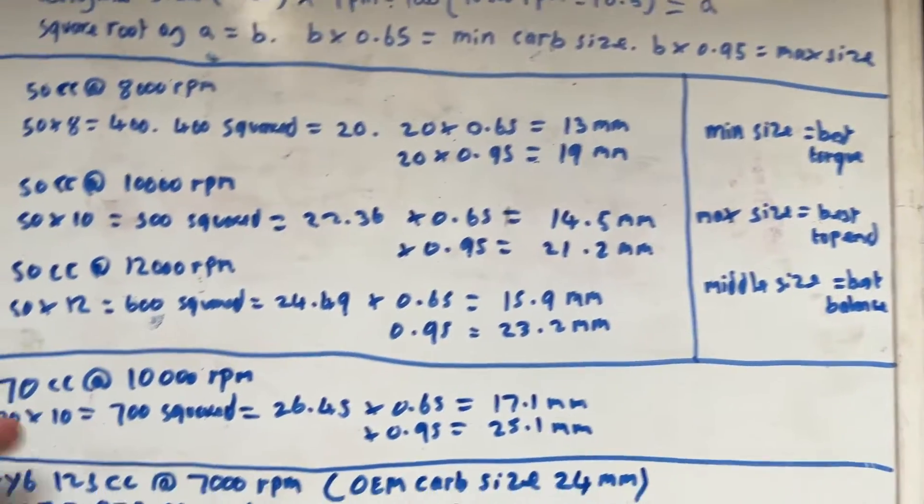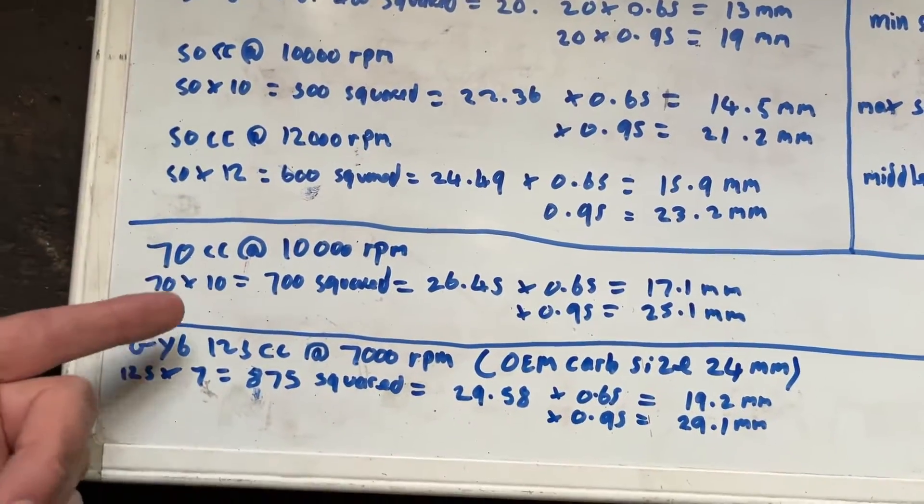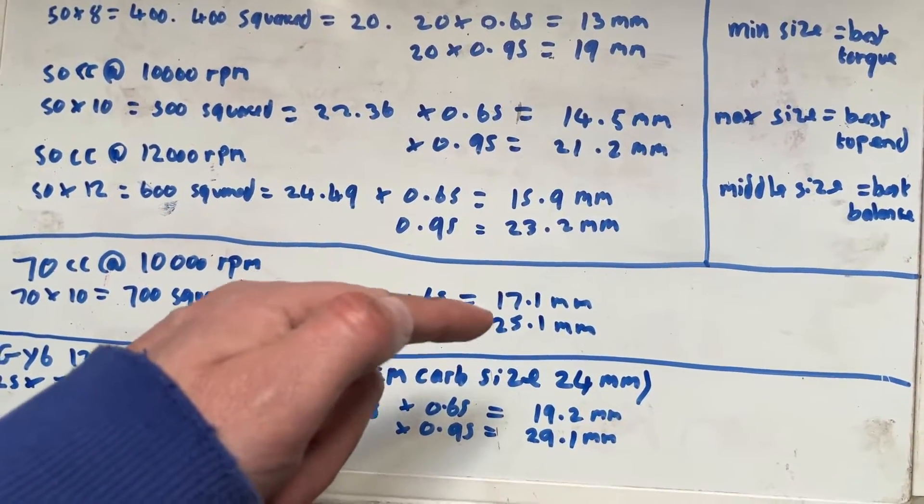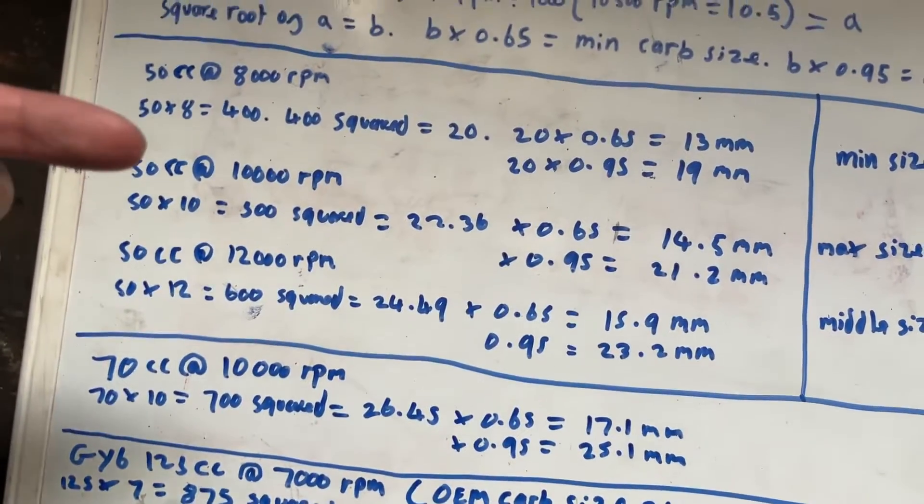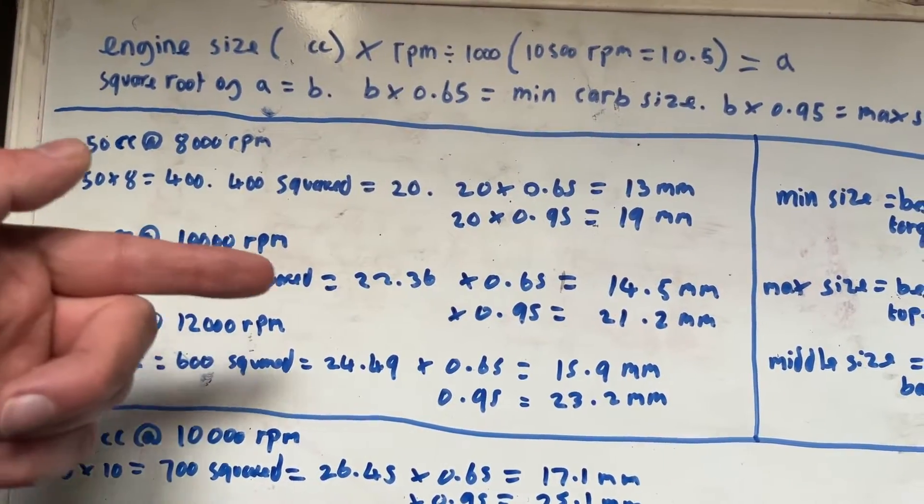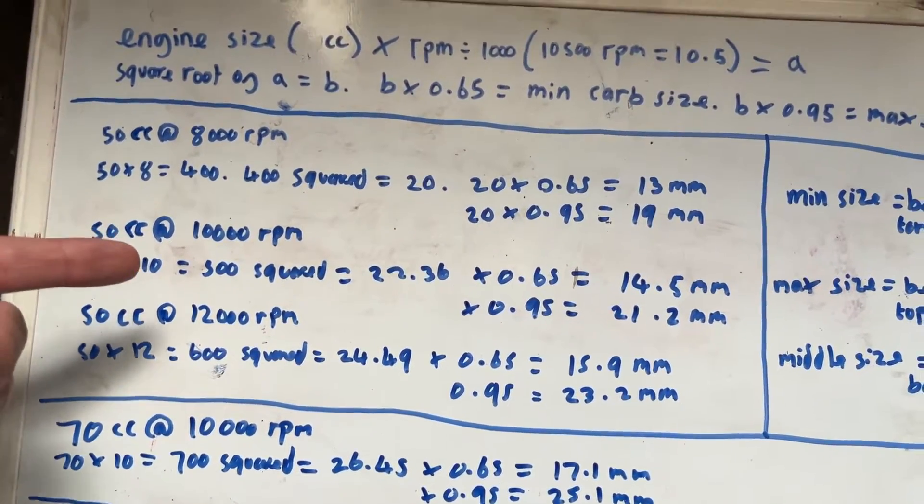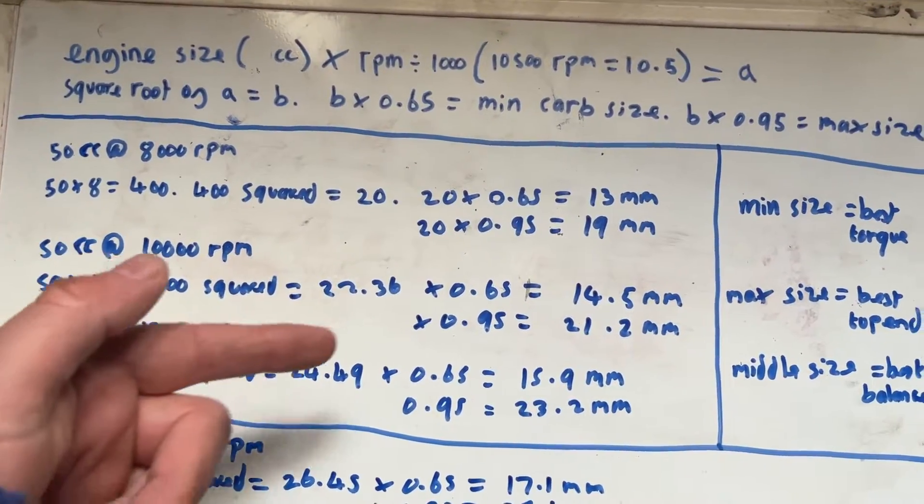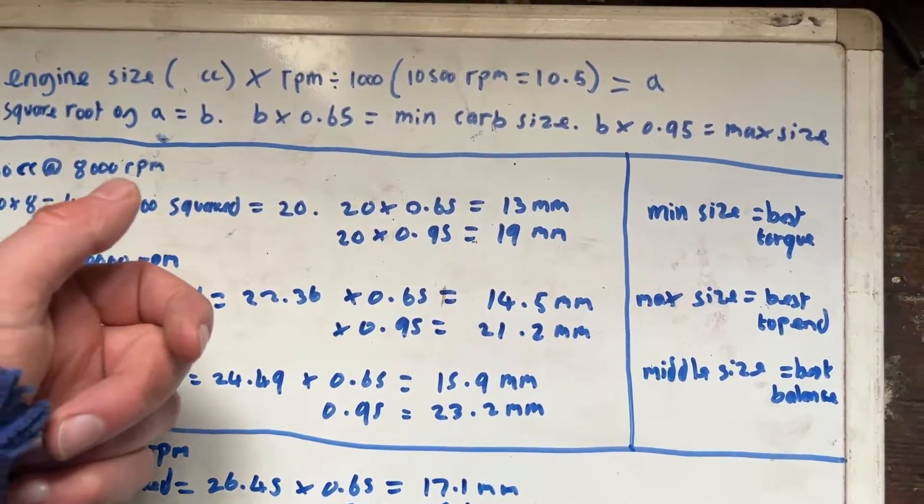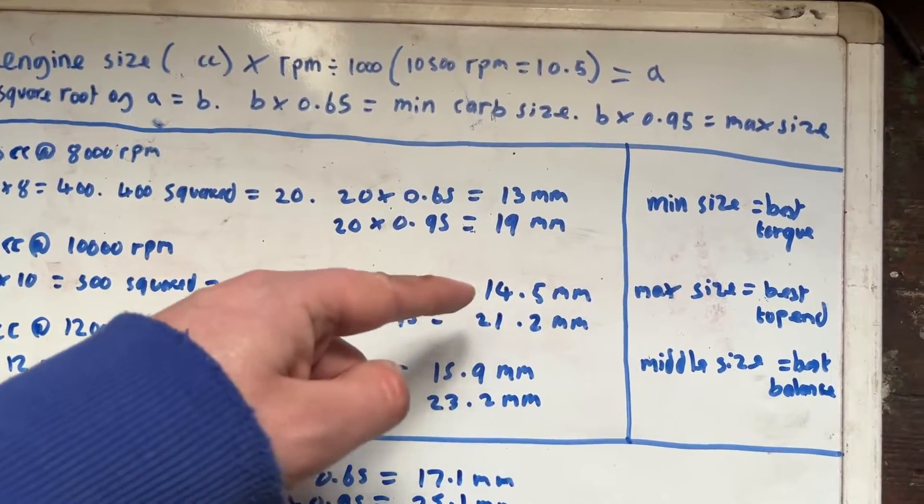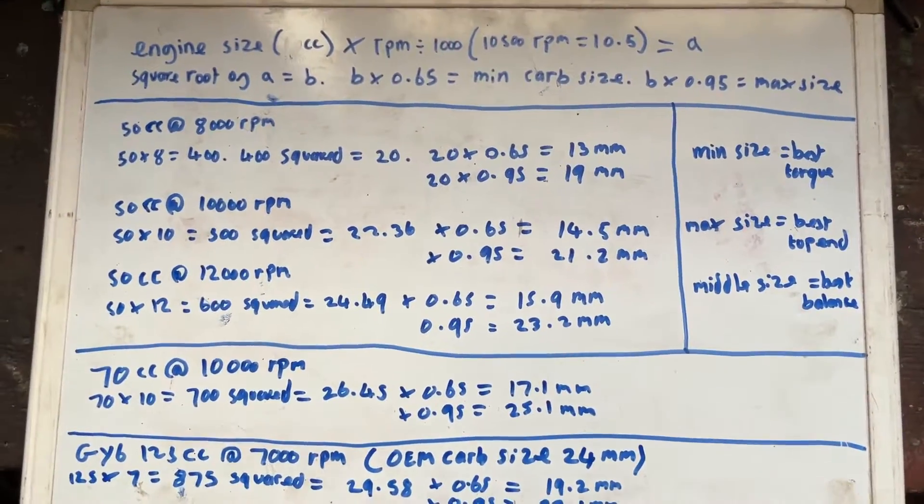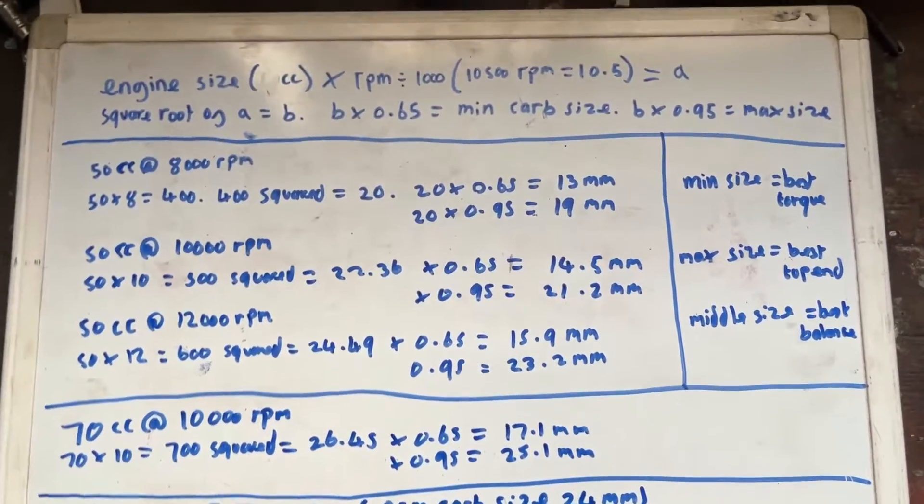So, pretty typical 70cc at 10,000 RPM, you're probably going to go about 19 to 21 millimeter. If you've got a sports 50cc kit, then like the Polini 50cc kits for example at 10,000 RPM, if you want a balance, you probably want to go somewhere around the 18 to 19 again on that as well. So you can see how this is really quite helpful to give you a base to jump off of effectively.